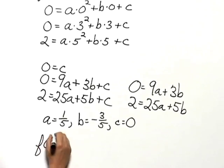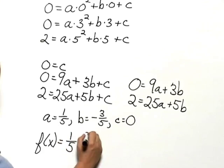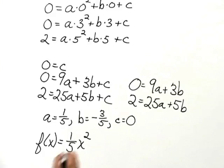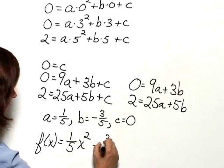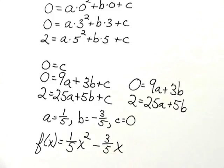So we have f of x equals ax squared would be 1 fifth x squared. bx would be negative 3 fifths x plus c would be plus 0, which we don't need to write. So this is the quadratic function that fits those data points.